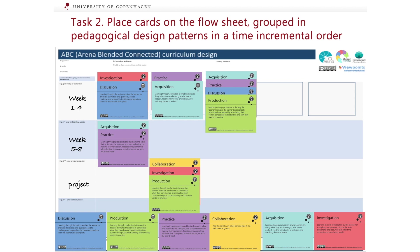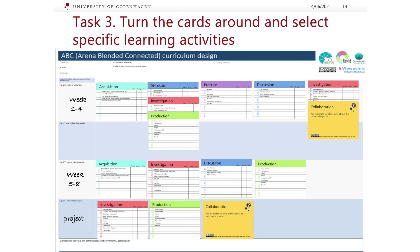Once you have placed the cards, you can turn the cards around. On the back side, you can see the specific learning activities. For example, acquisition may be reading a book chapter, watching a lecture — either face-to-face or online, etc. Similarly, different learning activities are described for investigation, discussion, practice, and production.